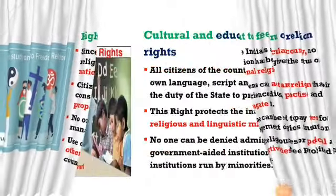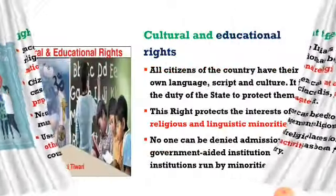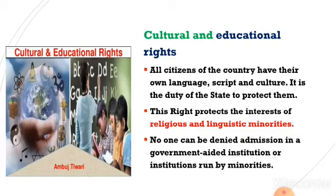The fifth fundamental right is cultural and educational right. Its main aim is to protect minor religions and languages, since minority religions, languages, and cultures are followed by few people, and the government tries to protect their interests. Under this right, no one can be denied admission in government, government-aided institutions, or institutions run by any minorities. Providing education opportunities to all is the main aim of this right.